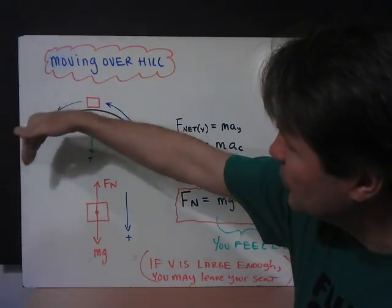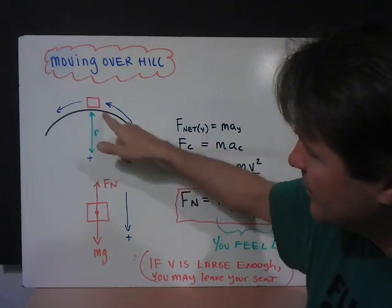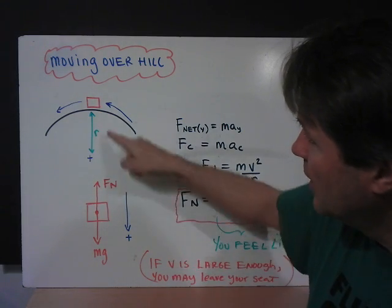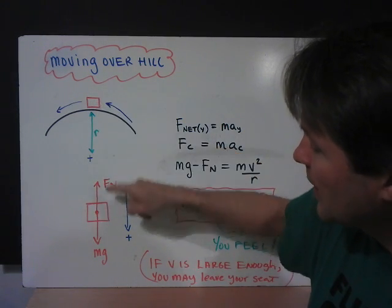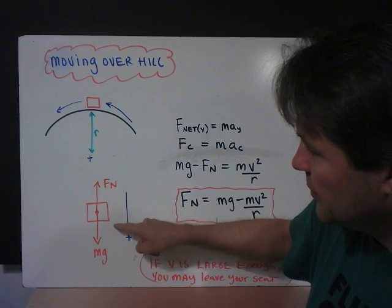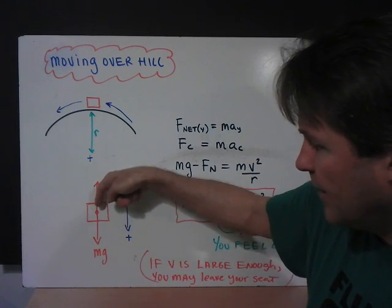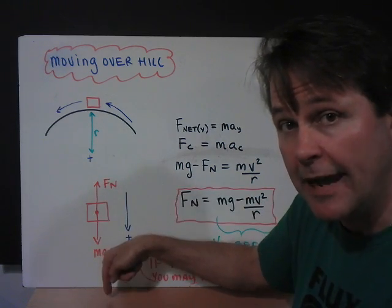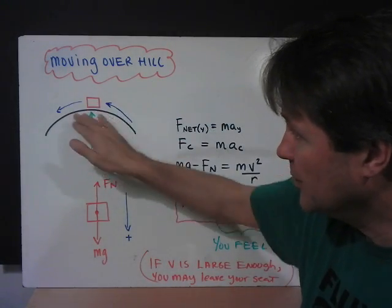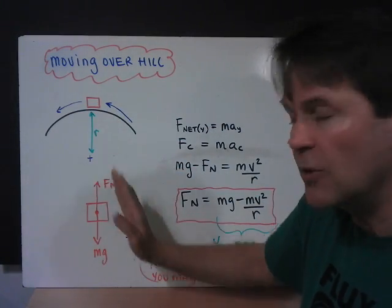As you go up and over that hill, that has a radius that's measurable. If that's a car going over the hill, here's the free body diagram. You have mg, gravity, pulling the car down into the hill. The hill is a surface, so it provides a normal force upward.